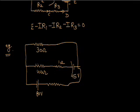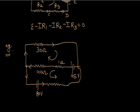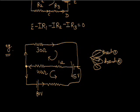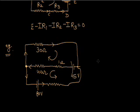Suppose current is flowing in this direction for this loop. Let us define the circuit terminology. This is called a loop or closed circuit, this is called a node or junction, and this is called a branch. We have branch one, branch two, and branch three. Now we will solve it using Kirchhoff's laws.